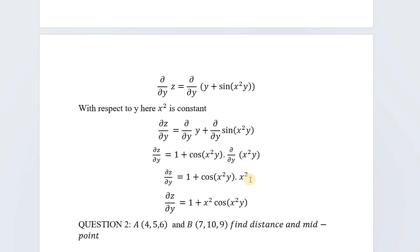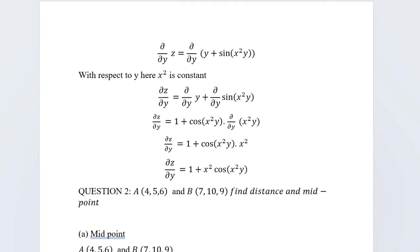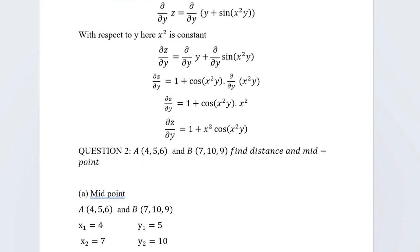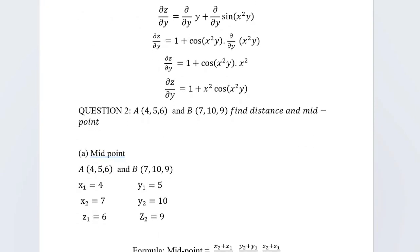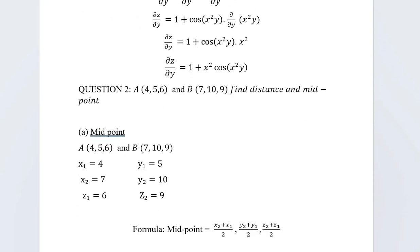Multiplying 1 by x² gives x². So the partial derivative with respect to y is: ∂z/∂y = 1 + x²·cos(x²y). I hope question one is now clear. If you have any queries, ask me in the comment box. Next, let's move to question number 2.